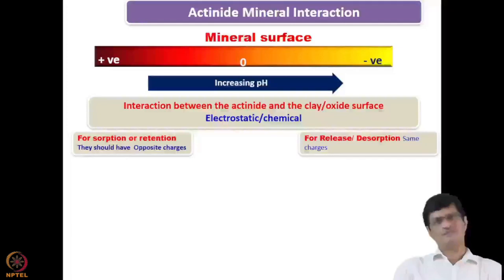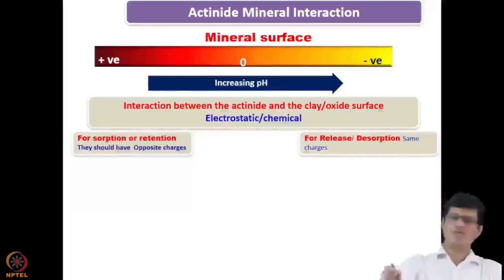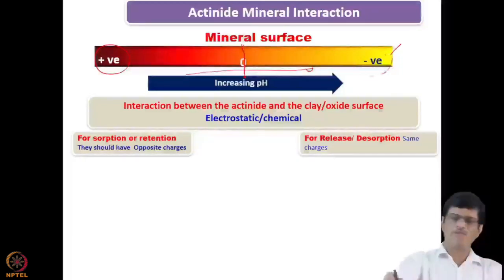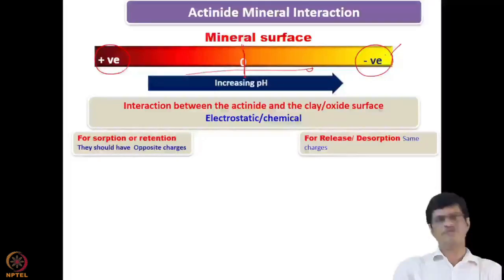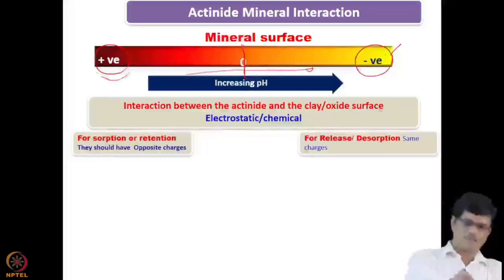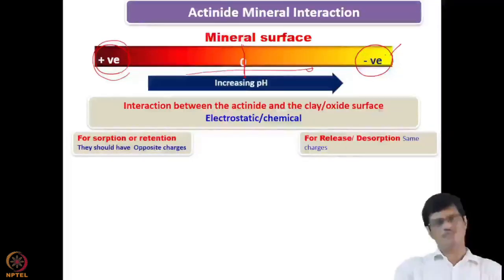Now the actinide-mineral interaction: the mineral surface, as shown schematically here, can have varying charge depending on pH. At the PZC the surface has zero charge; below the PZC it has positive charge; above the PZC it has negative charge. The interaction between the actinide and the clay or oxide surface can be electrostatic or chemical. Anionic species interact at lower pH with the positive mineral surface, while cationic species bind at higher pH where the surface is negatively charged.